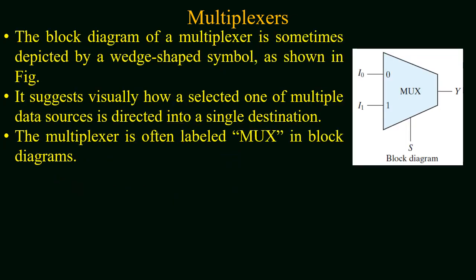The block diagram of a multiplexer is sometimes depicted by a wedge shape symbol as shown in the figure. The multiplexer has two input data lines represented by I0 and I1, connected to the 0 and 1 terminals of the multiplexer. It has one selection line and one output line represented by Y. The figure suggests visually how a selected one of multiple data sources is directed to a single destination. The multiplexer is often labeled as MUX within a block diagram.